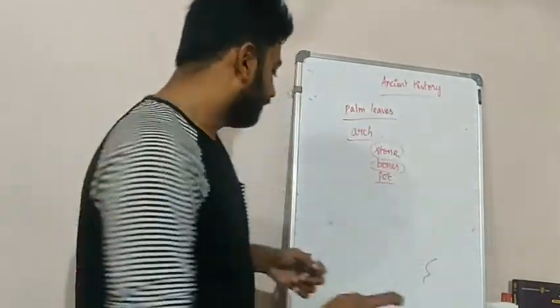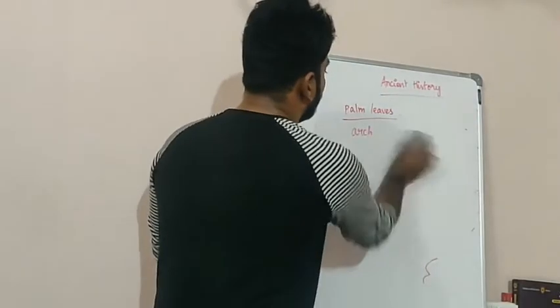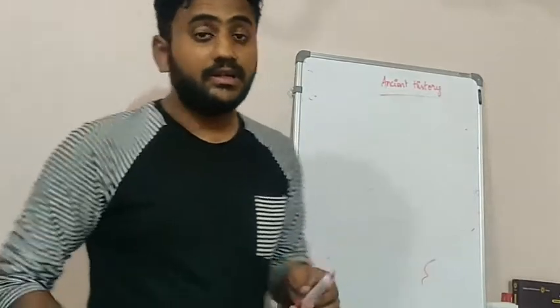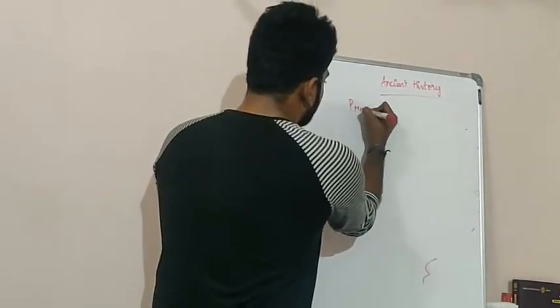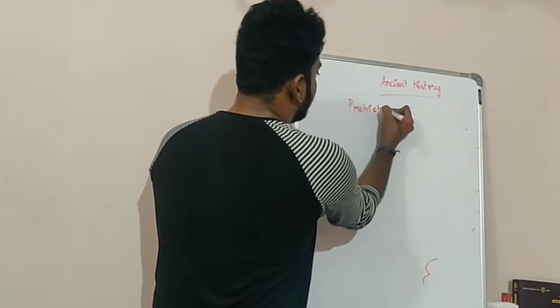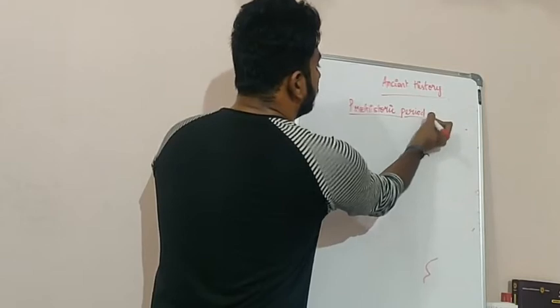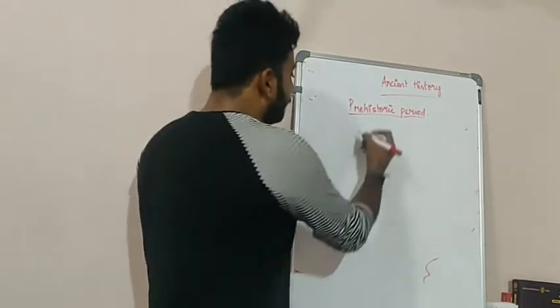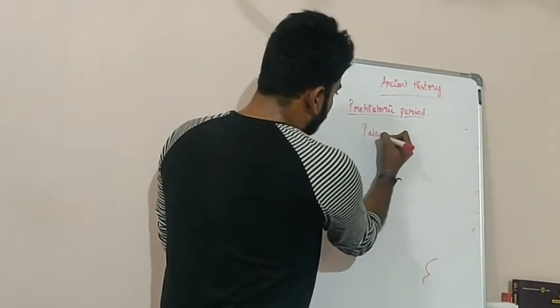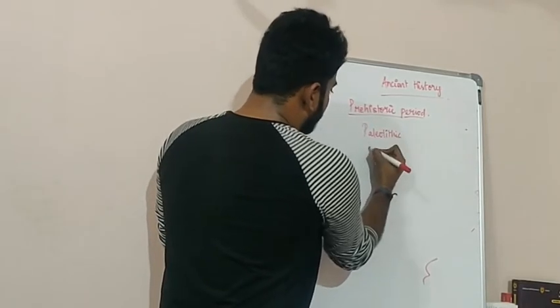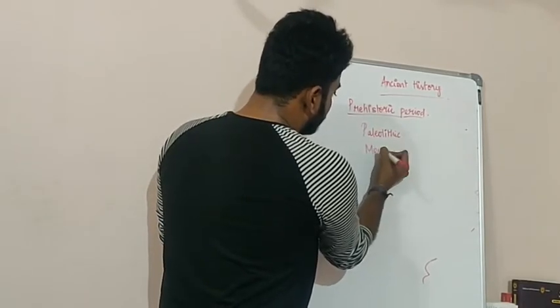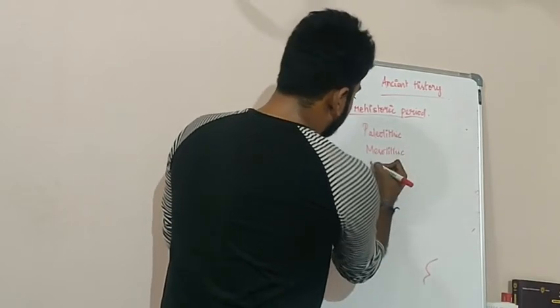That is why archaeologists in previous years divide history into 3 periods, and there is a special division: the Prehistoric Period. The Prehistoric Period has 3 divisions — Number 1: Paleolithic, Number 2: Mesolithic, Number 3: Neolithic.